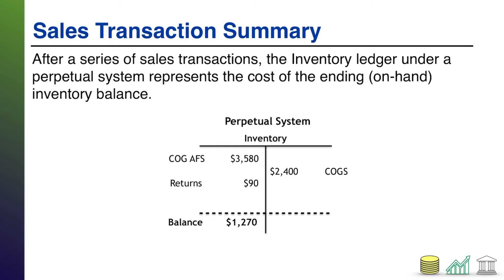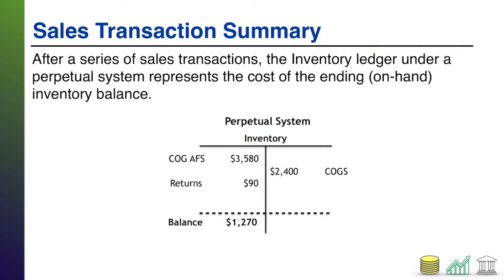As we purchase inventory, the inventory account is debited — it's increased for the amounts of those purchases. Those purchases are adjusted for whether or not you get a discount, or whether you return any of those purchases. But at the end of the day, whatever inventory you started with plus whatever you purchased leads to what's known as cost of goods available for sale — beginning balance plus purchases.